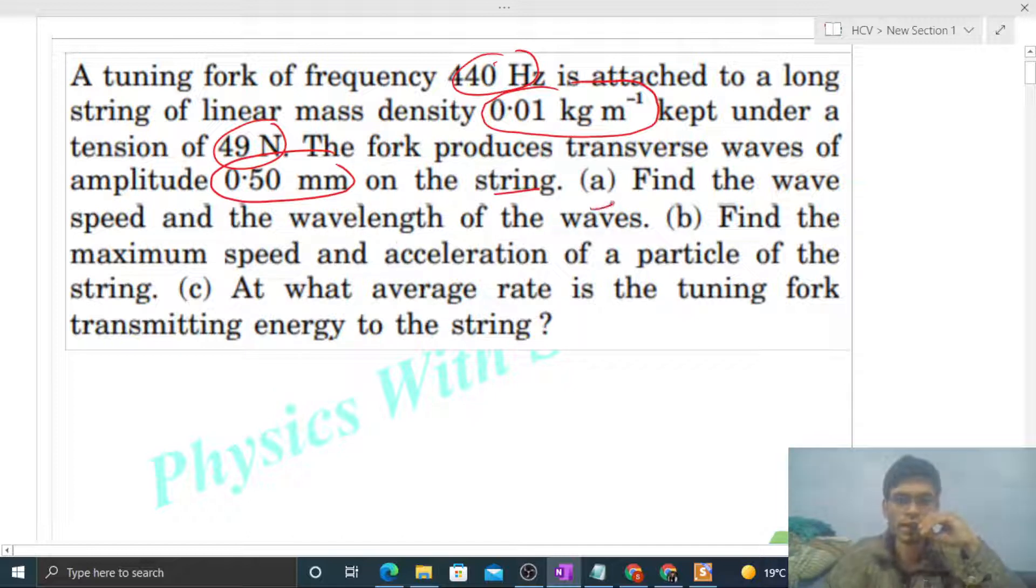So we have a lot of given data. Let me write it. We have a string and we produce transverse waves in this string with the help of a tuning fork. The frequency of this tuning fork is 440 Hz, which means the transverse wave produced in the string will also have a frequency of 440 Hz.